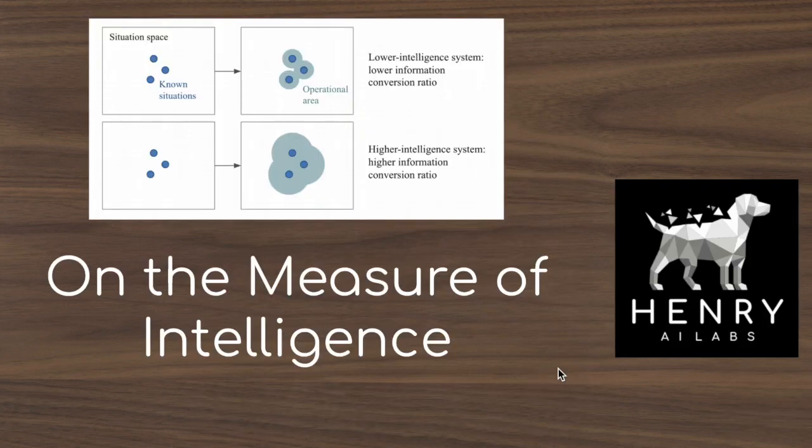Thanks for watching this overview of topics from 'On the Measure of Intelligence.' I hope this was a good introduction to the paper and helped you think about skill acquisition efficiency as a function of priors, experience, and generalization difficulty, and the idea of levels of generalization from absent, local, broad, to extreme generalization. Please subscribe to Henry AI Labs for more deep learning and AI videos.